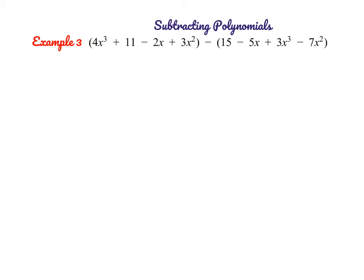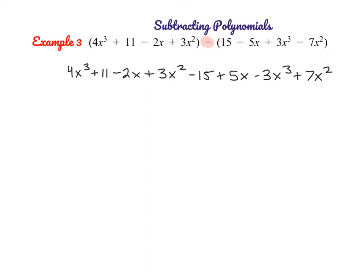Now we're going to be subtracting polynomials. When you're subtracting two polynomials, you need to remember that this minus sign is affecting every single term in the second polynomial — we're actually subtracting every single term. I like to distribute this negative to every single term in the second polynomial and rewrite the problem. So we have 4x cubed plus 11 minus 2x plus 3x squared — and then that negative affects every term after. So this becomes minus 15, subtracting negative 5x is like adding 5x, the negative turns the next term to minus 3x cubed, and then negative times negative gives us plus 7x squared.